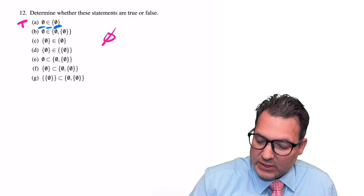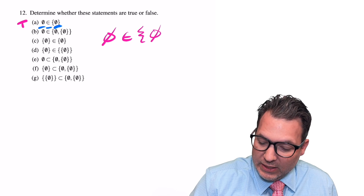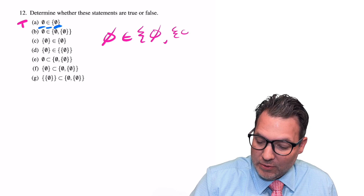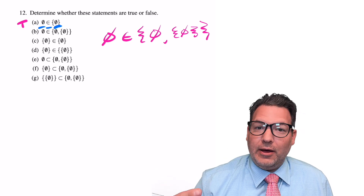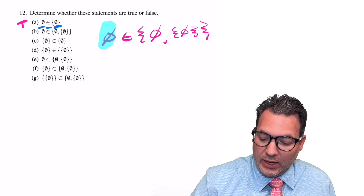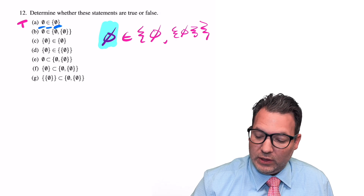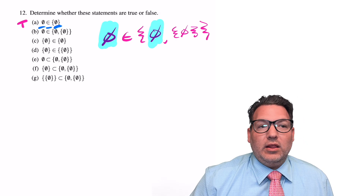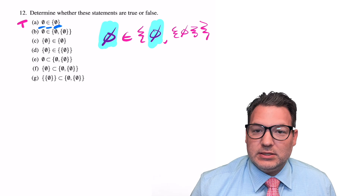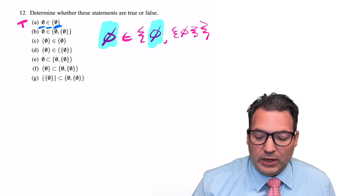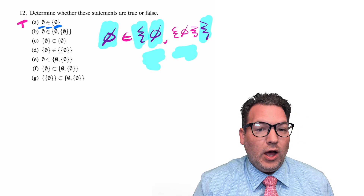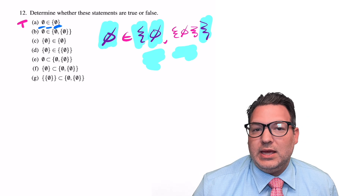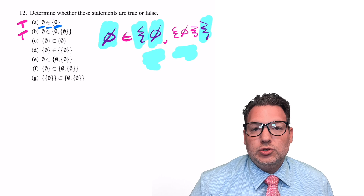For B, does the empty set itself belong as an element to a set that contains the empty set and also contains a set that contains the empty set? Saying it out loud, I can see why this is confusing, but we can see the element on the left is one of the elements in the set on the right. So yes, the empty set is an element of that set. B is also going to be true.